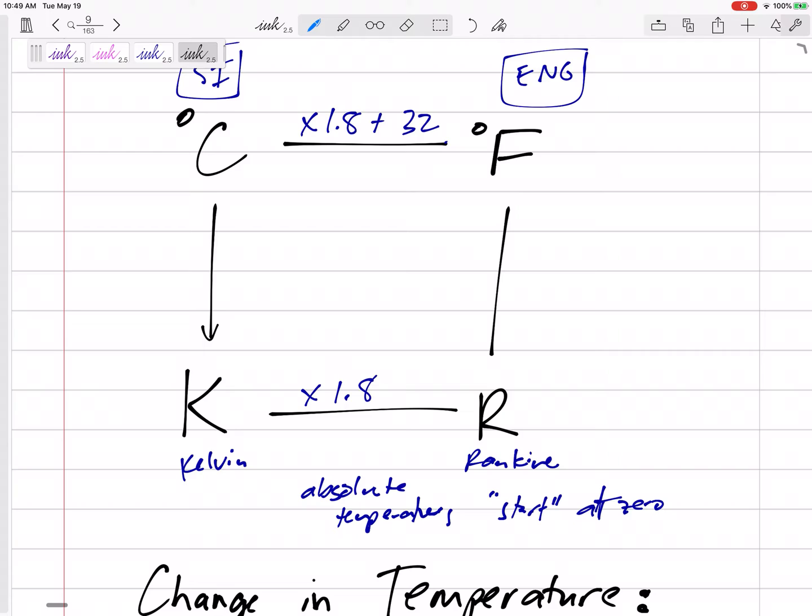So from Celsius to Kelvin add 273.15. Many times I'm just going to add 273.